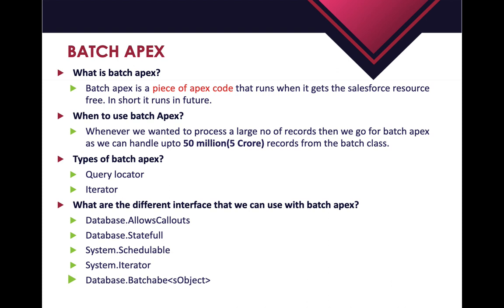Airtel is currently disabling outgoing services for all numbers that have not made a recharge within every 30 days. So if you are using an Airtel mobile number and you have not made any recharge after 30 days since the last recharge, your outgoing services will be disabled and you will not be able to make any calls, even if you have balance. In this case, they write a Batch Apex behind the scenes which fetches all mobile records that have not made any recharge in the last 30 days and then disables their outgoing services.